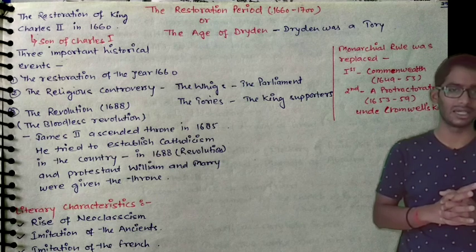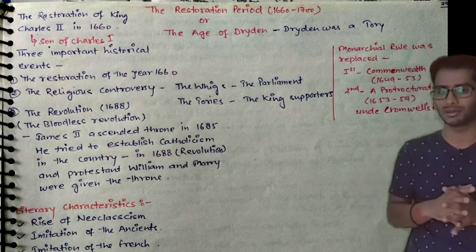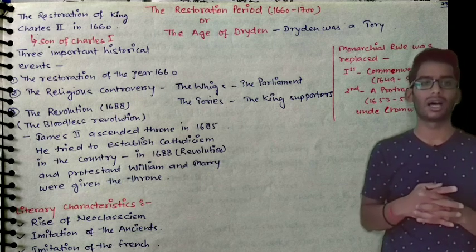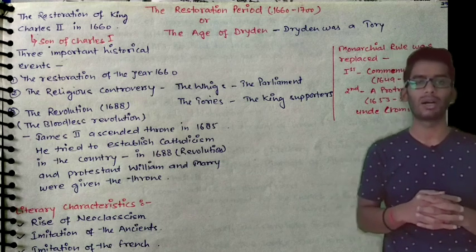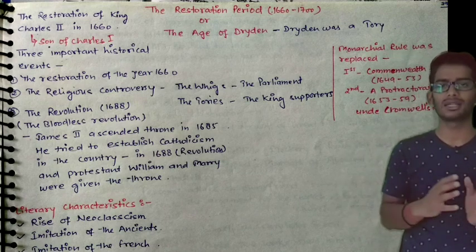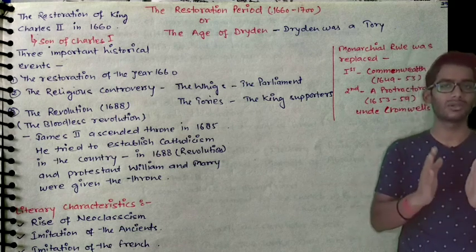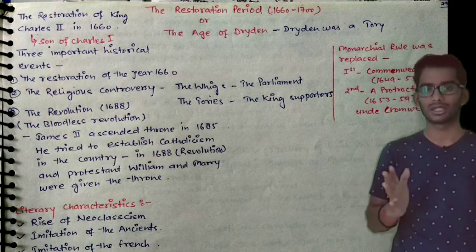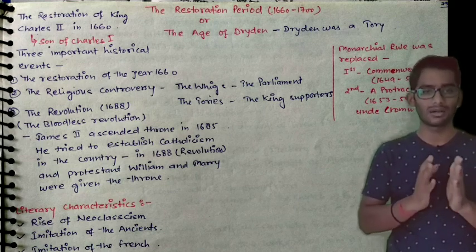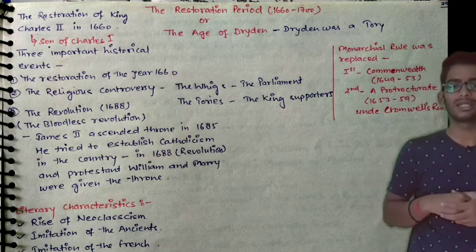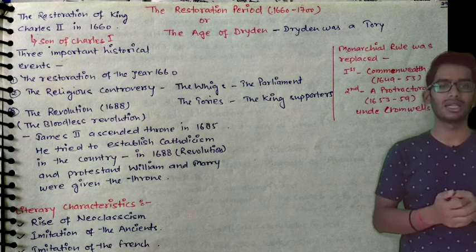Third is the Revolution of 1688, also known as the Bloodless Revolution. James II ascended the throne in 1685 — remember this. Then in 1688, the revolution occurred, and Protestant William and Mary were given the throne.